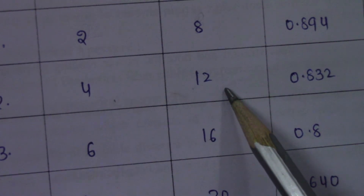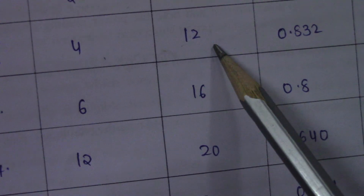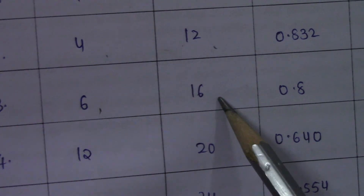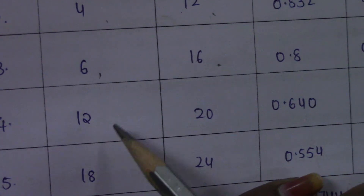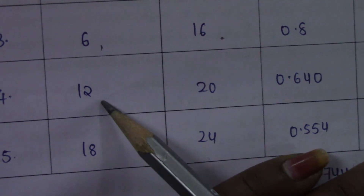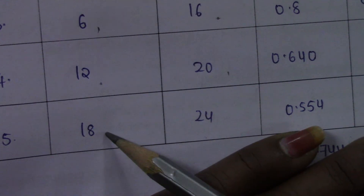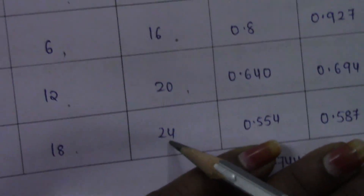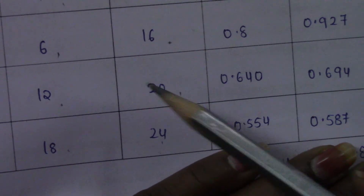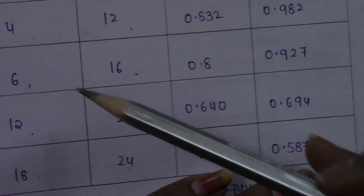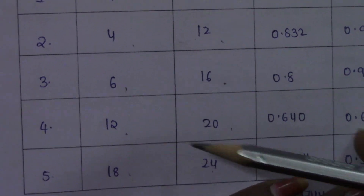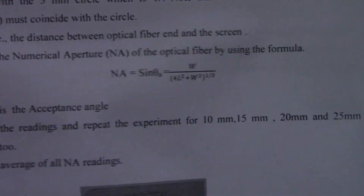For L = 6 mm, W = 16; for L = 12 mm, W = 20; for L = 18 mm, W = 24. With this tabular column you have all the L and W readings, and you substitute these values in the formula.